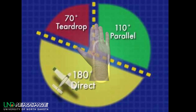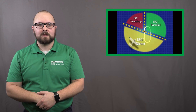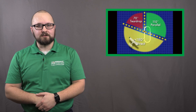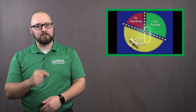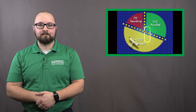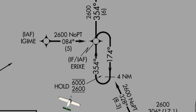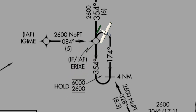Now that we have talked about how to figure out which entry you will use, let's talk about each entry. A direct entry is the easiest way to enter a hold. All you need to do is establish your holding speed within three minutes of your holding fix, fly direct to the fix, and start your outbound turn. It's that easy.